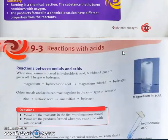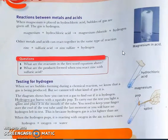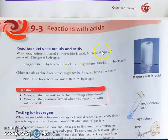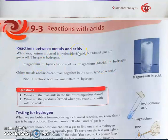Next we are going to learn about reactions with acids. The first reaction is between a metal and an acid. When a metal reacts with an acid, it produces a salt plus hydrogen. For example, magnesium reacting with hydrochloric acid produces magnesium chloride and hydrogen. The magnesium displaces hydrogen, and hydrogen gas is formed.